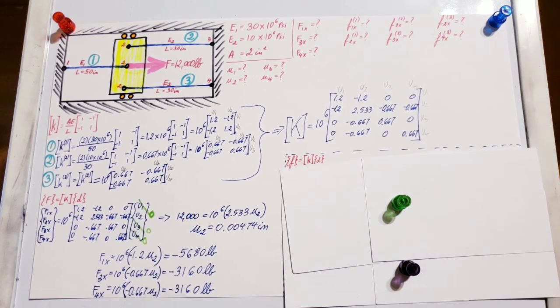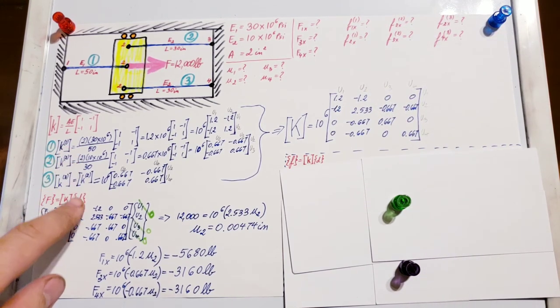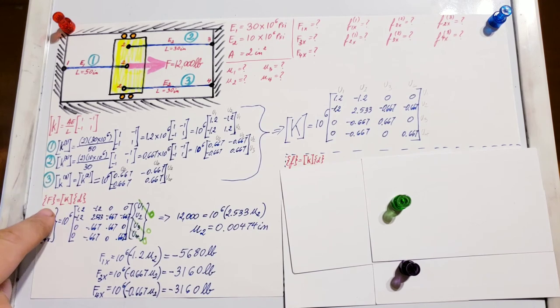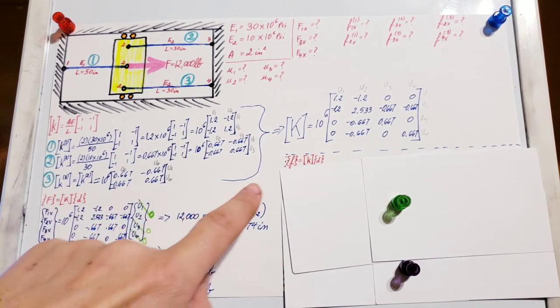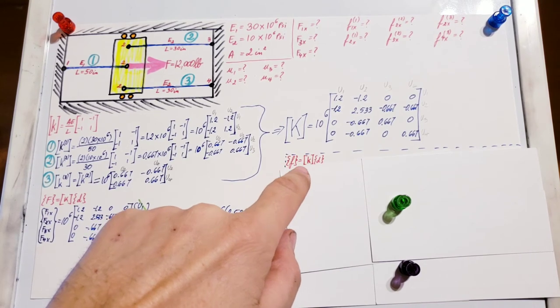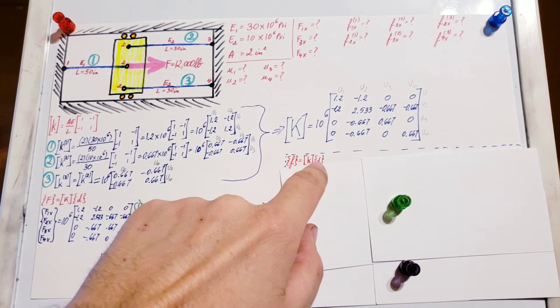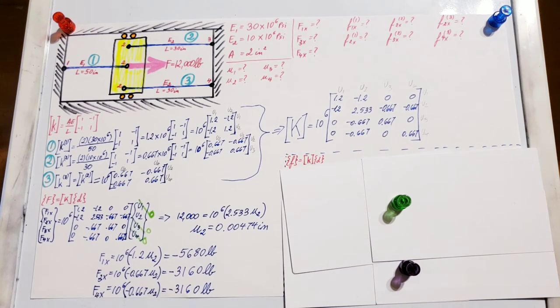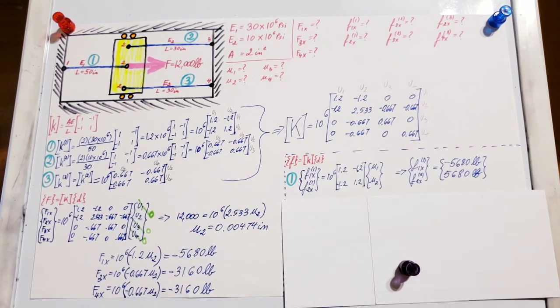The final question for this problem is the local forces in each element: 1, 2, and 3. We'll rely on the same formula but in local form, where little f equals little k times displacements. Let's get started with our first element.